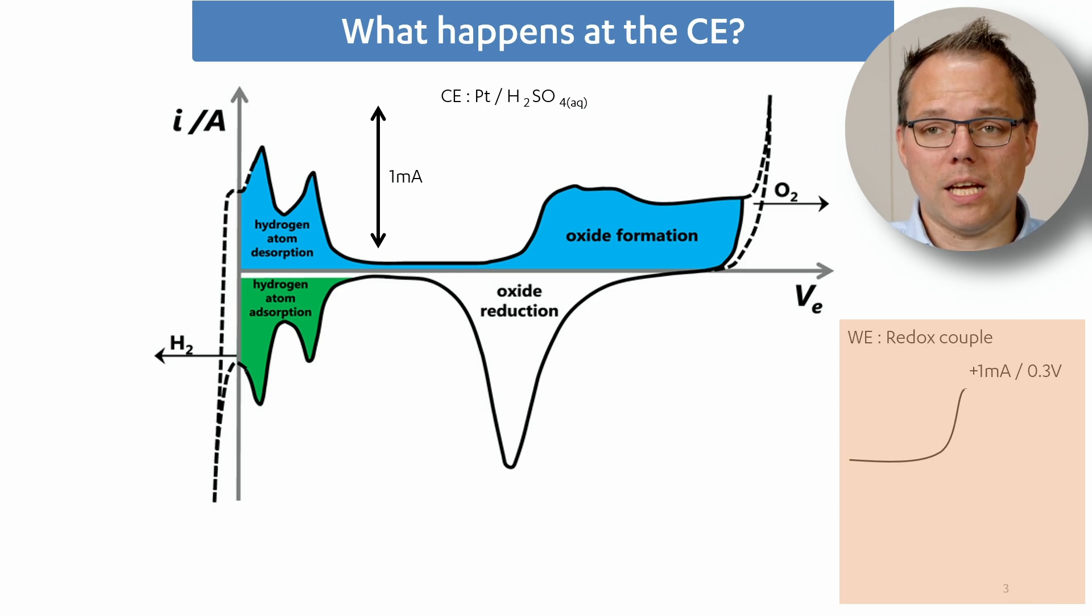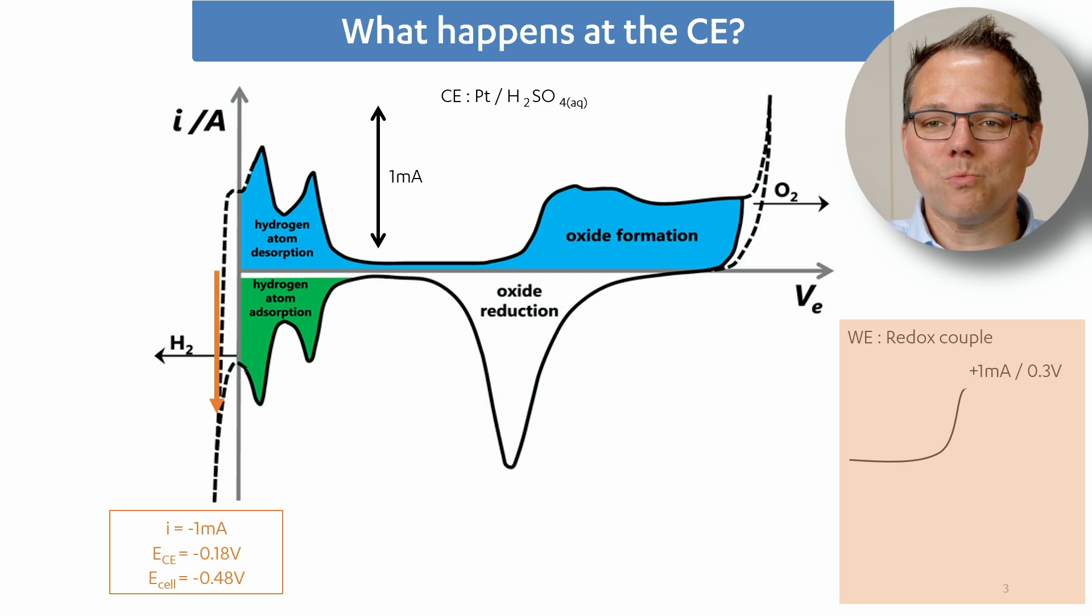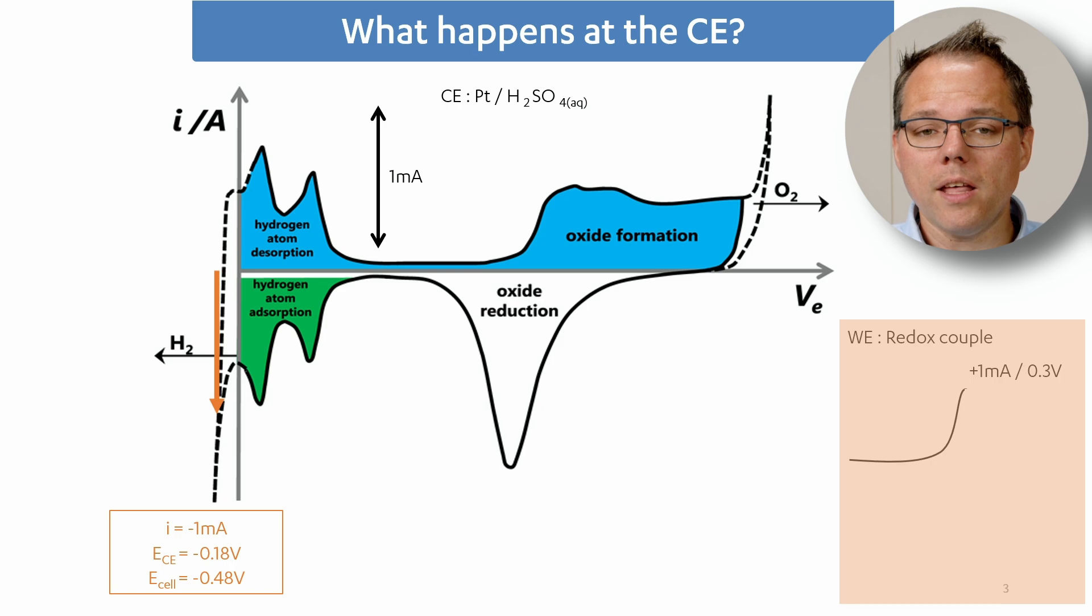What's now happening at the counter electrode? The counter electrode has to deliver now one milliampere but in the opposing direction, so minus one milliampere. So the counter electrode starts at its OCP, which is around 600 millivolts, and the current is of course zero. Then the potentiostat moves the potential of the counter electrode until it reaches minus one milliampere. So in that case it means towards more cathodic potentials and we end up at hydrogen evolution potentials. Now we have our minus one milliampere. We are at around minus 180 millivolts, which means our cell voltage, the difference between the counter and working electrode, is 480 millivolts.